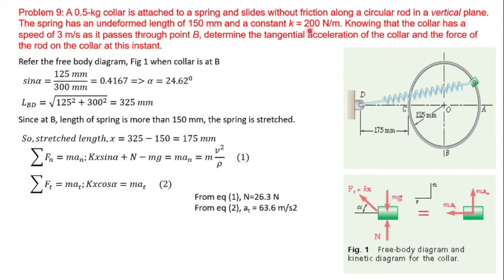A 0.5 kg collar is attached to a spring and slides without friction on a circular rod in a vertical plane. The spring has an undeformed length of 150 mm and constant K. Knowing that the collar has a speed of 3 meters per second as it passes through point B, determine the tangential acceleration of the collar and the force of the rod on the collar at this instant.